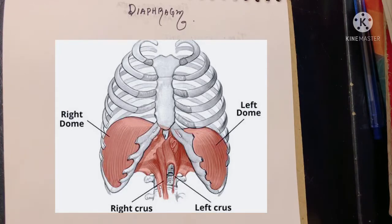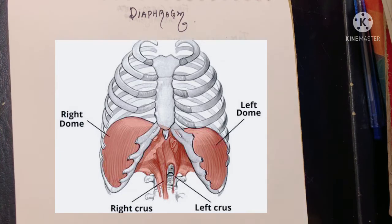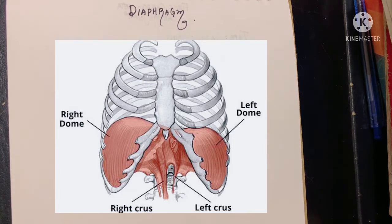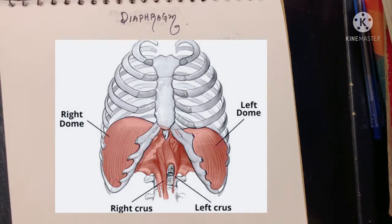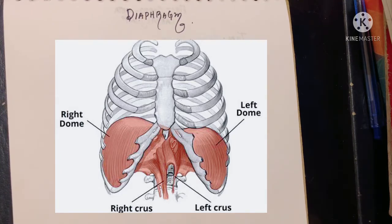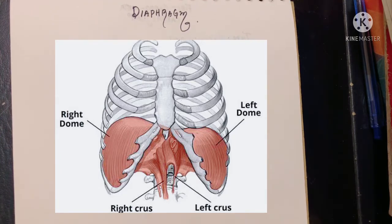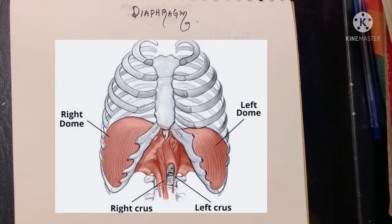Assalamu alaikum, this is Dr. Hasna and today we'll study the diaphragm. The diaphragm is the chief muscle of respiration and it is a musculotendinous partition that separates the thorax and abdominal cavity from each other.